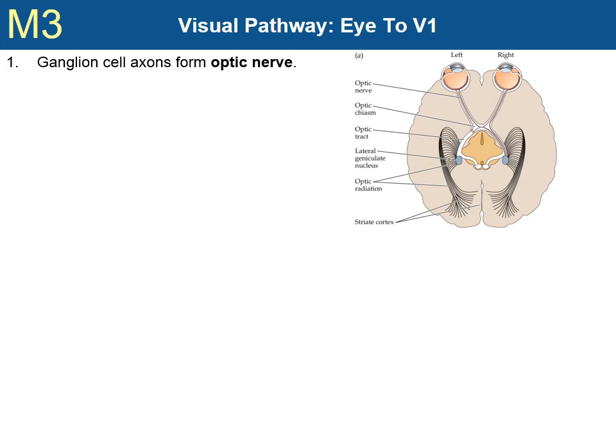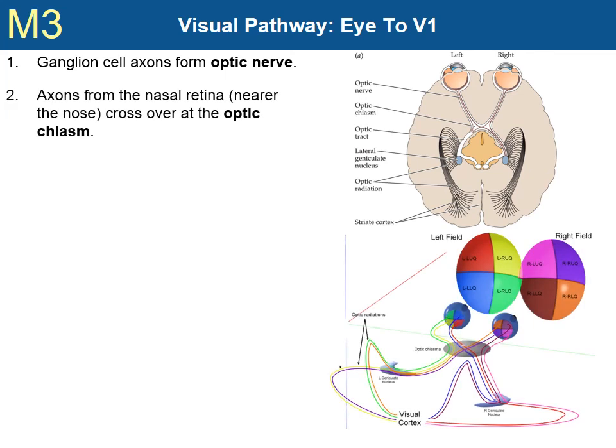First, the ganglion cell axons form the optic nerve. These are the ganglion cells that are in the retina of the eye, and their axons exit the optic disc. These axons extend to the optic chiasm. Here, the fibers of the optic nerve split.